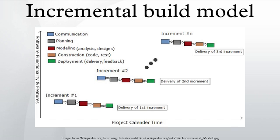The incremental build model is a method of software development where the product is designed, implemented, and tested incrementally until the product is finished. It involves both development and maintenance. The product is defined as finished when it satisfies all of its requirements.